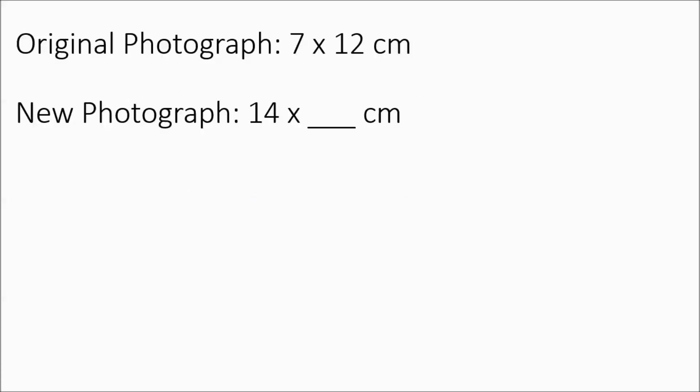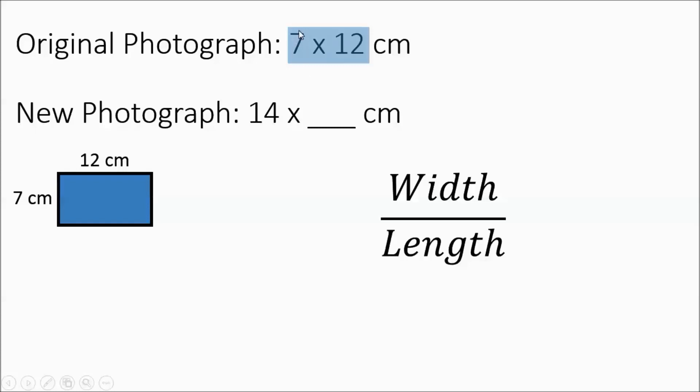So this first problem, we have an original photograph being 7 by 12 centimeters, and the new photograph is going to be enlarged to 14 by something centimeters. Now a lot of you might be able to do this one in your head, it's more obvious than some of the others. But I'm going to show you what it all means and how to set it up because they won't always be this easy. So here's the original picture, 7 centimeters by 12 centimeters. And I'm going to go ahead and start setting up my proportion.